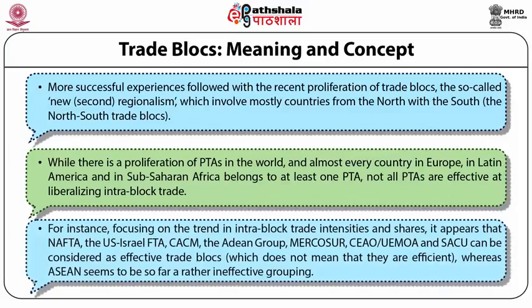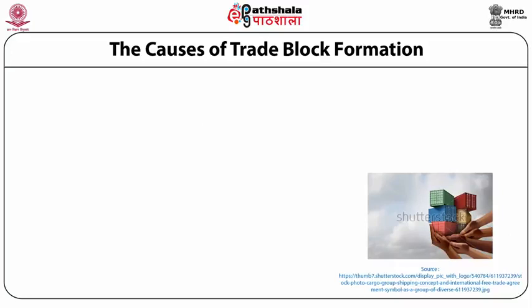While there is a proliferation of PTAs in the world and almost every country in Europe, Latin America and sub-Saharan Africa belongs to at least one PTA, not all PTAs are effective at liberalizing intra-block trade. Focusing on intra-block trade intensities and shares, it appears that NAFTA, the US-Israel FTA, CACM, the Andean Group, Mercosur, CEAO, UEMOA, and SACU can be considered effective trade blocks, whereas ASEAN seems to be a rather ineffective grouping.